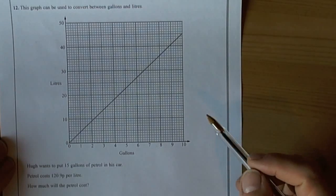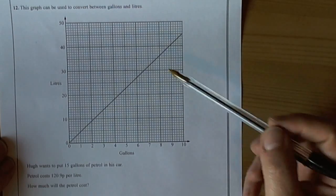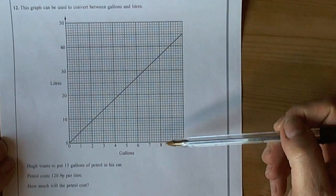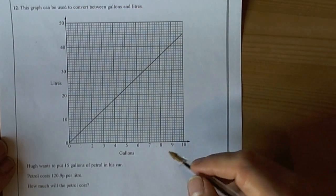Okay, so here we have a question about using a conversion graph, and so we need to look at the scales of the graph first to make sure we understand what each little square represents.